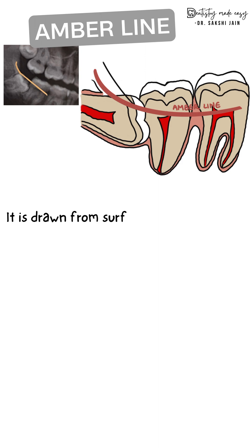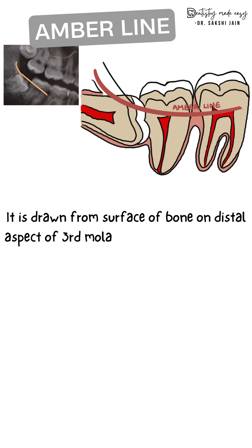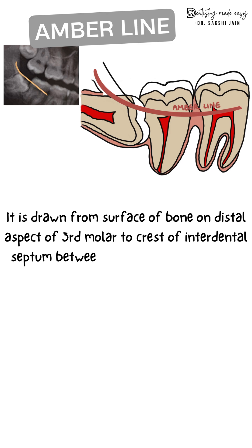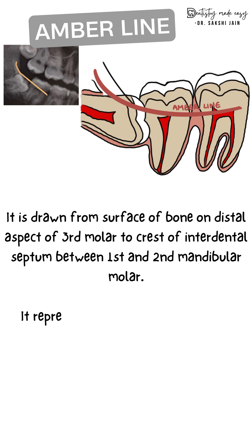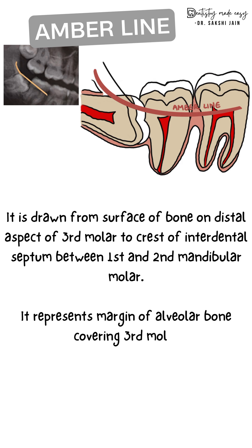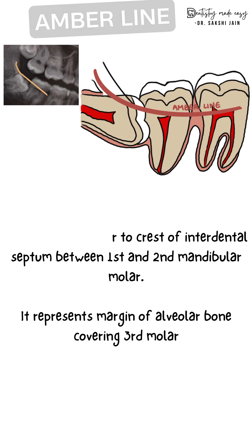The Amber line is drawn from the interdental septum of the first and second mandibular molar and extended towards the distal aspect of the third molar. This line represents the margin of the bone covering the third molar, indicating the amount of vertical bone that needs to be removed during extraction of the third molar.